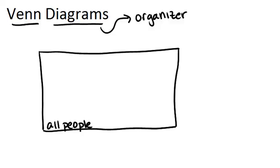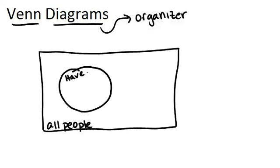Now, of these people, there are a set of them that have a dog. Not all people have a dog, but some do. So anyone in this circle is a person that has a dog.